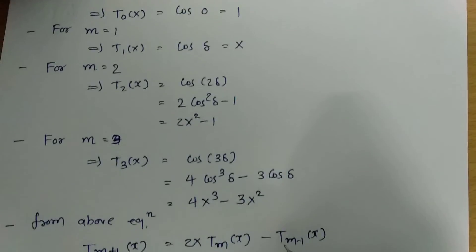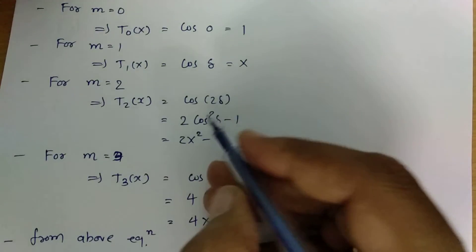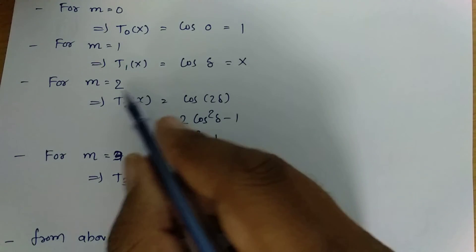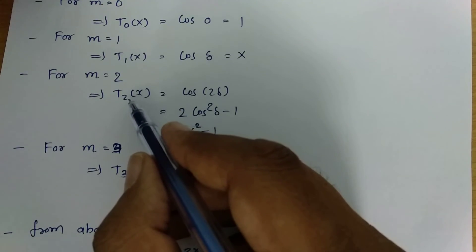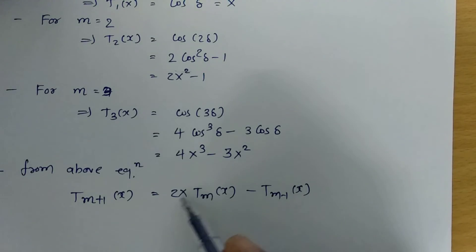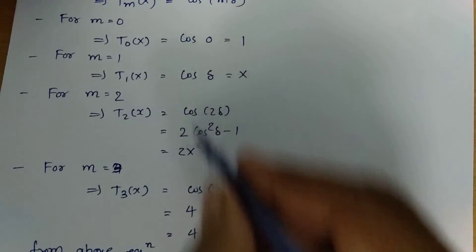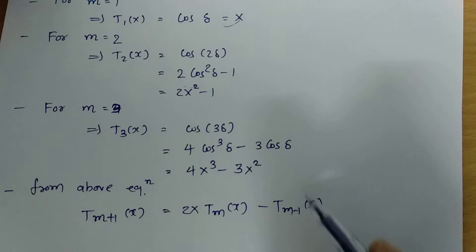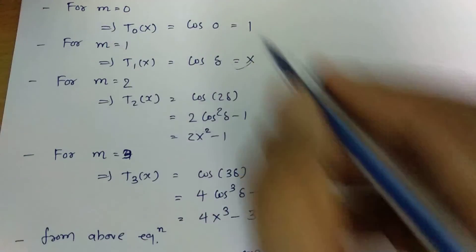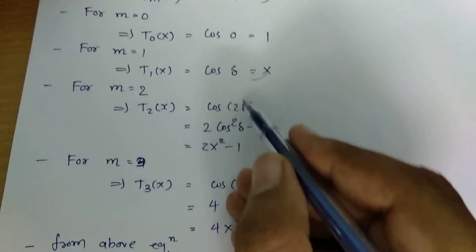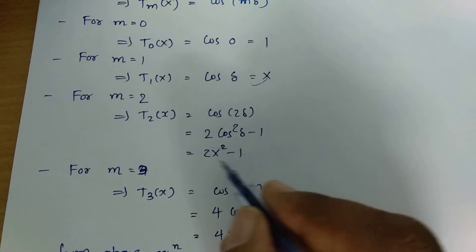Just verify it to make it more clear. For T2 of x, that is T(m+1) of x, it equals 2x times T1 of x which is x, minus T0 of x which is 1. So 2x times x equals 2x squared minus 1, which is indeed T2 of x.